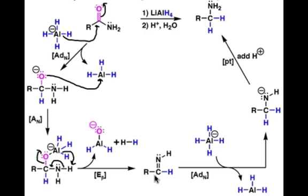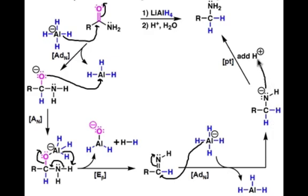The imine species that's created can then be attacked by a second equivalent of hydride in an AdN step. But this new tetrahedral intermediate that is formed does not have a good leaving group to facilitate beta elimination. Therefore, simple protonation gets us to the primary amine.